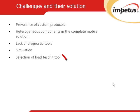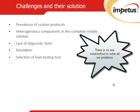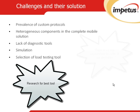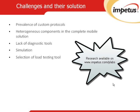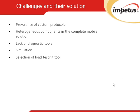The next challenge is selection of a load testing tool. It is a challenge to find a suitable tool that can fulfill all performance testing requirements, given the dynamics and challenges we have seen. So what is the solution? Well, there is no one solution or tool that solves all our problems. Researching the best tool for the project or task at hand is necessary. You may find some such research published on the Impetus website in the form of white papers that help identify the best tool for the job. And of course, you know how to Google.